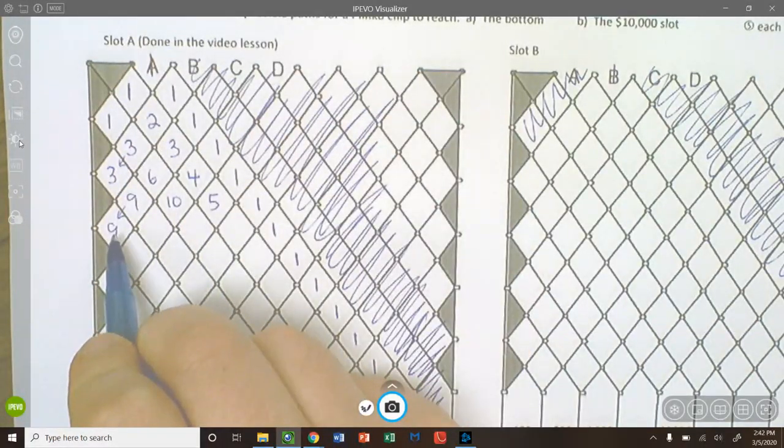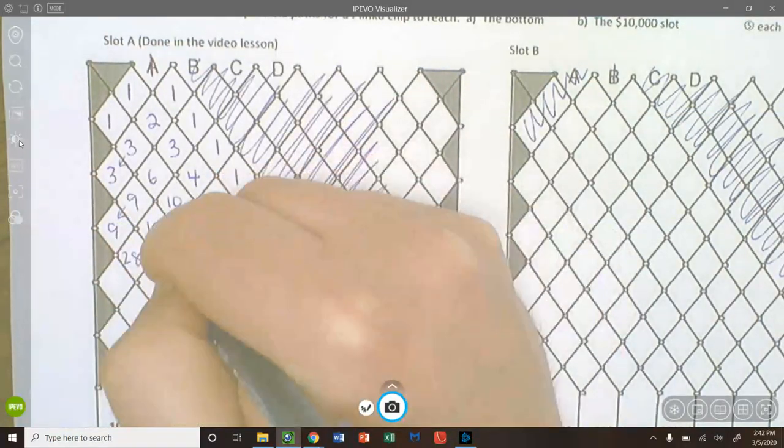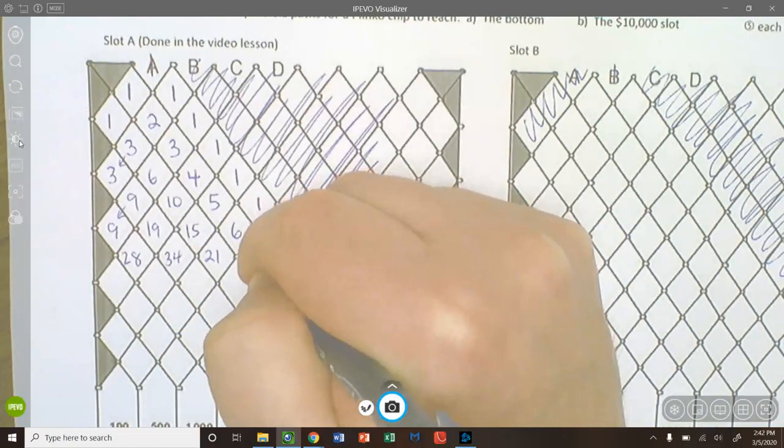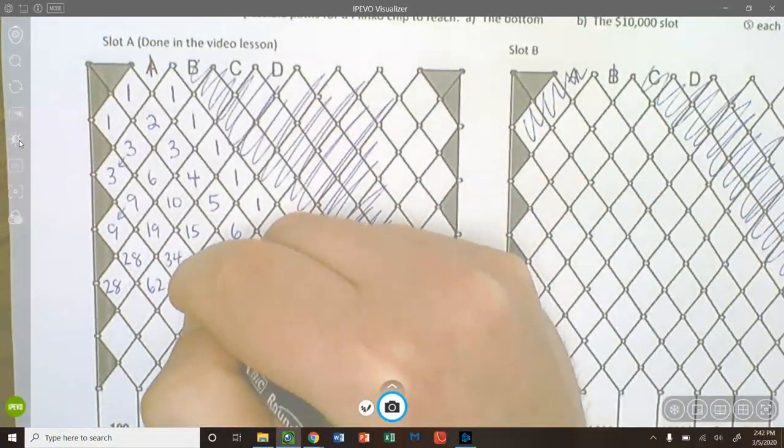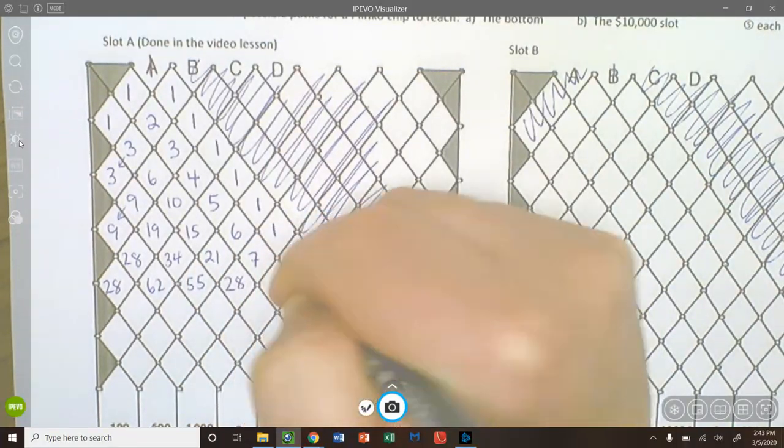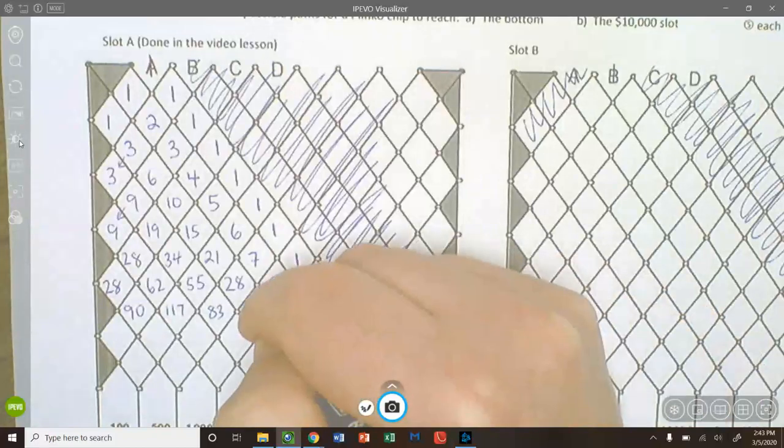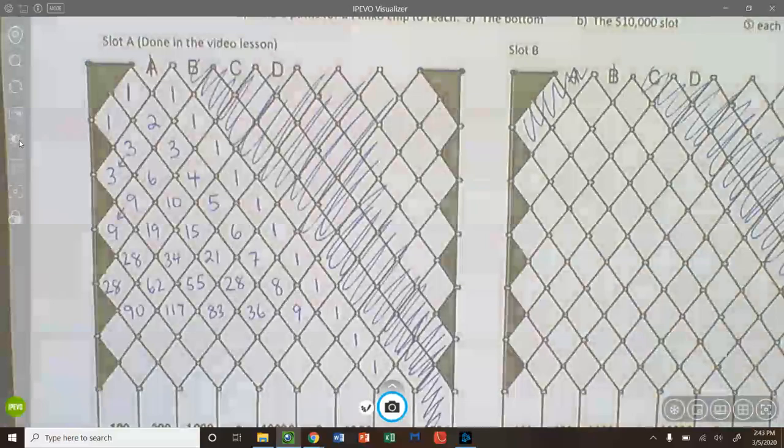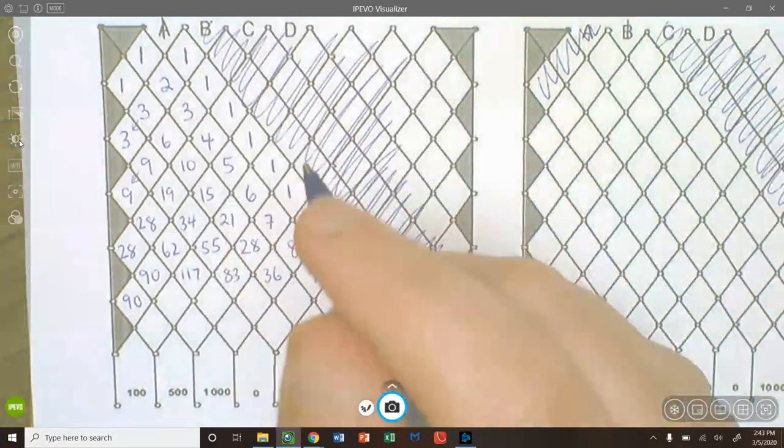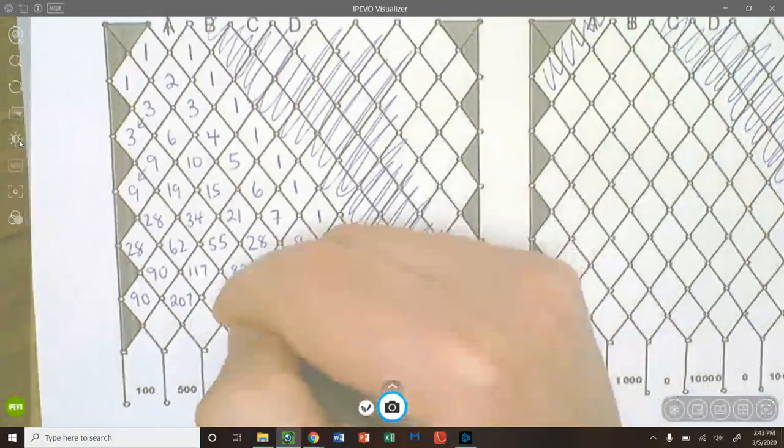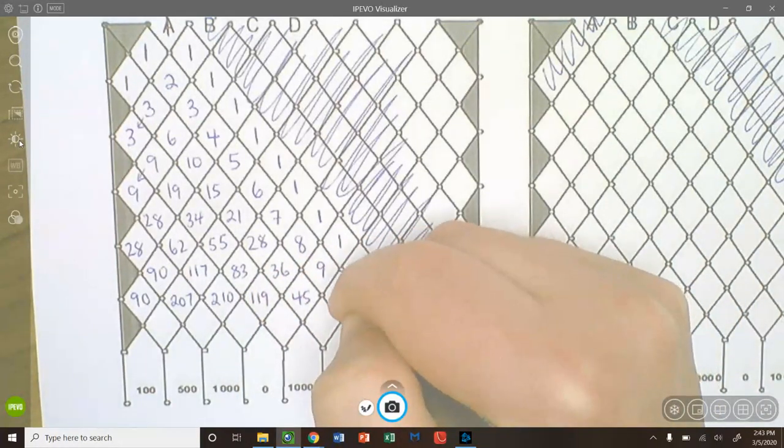But you need to be careful along the edge of the Plinko board, because there's only one way to get to this spot from the three. So you carry down the three. Three, six, four. And then the next row, nine, ten, five. And then carry the nine. So again, just be careful at the edges that sometimes you're just copying down a number. 19, 15, six, 28.